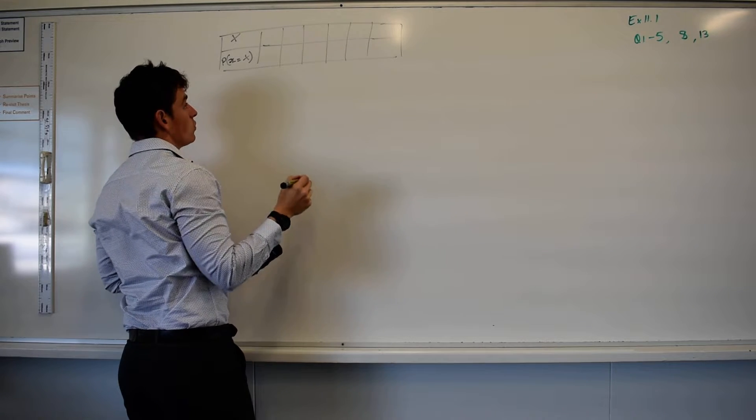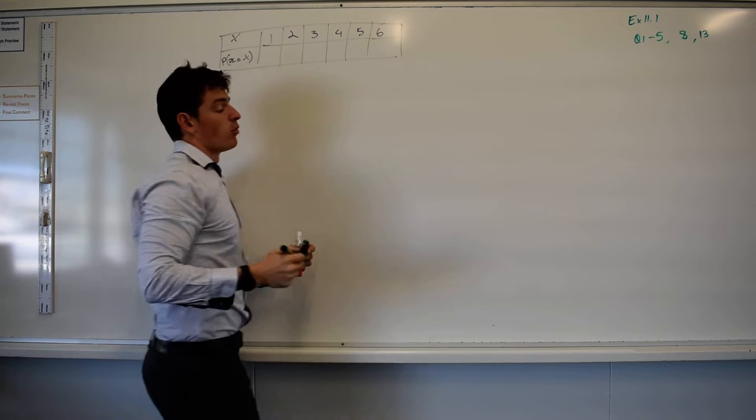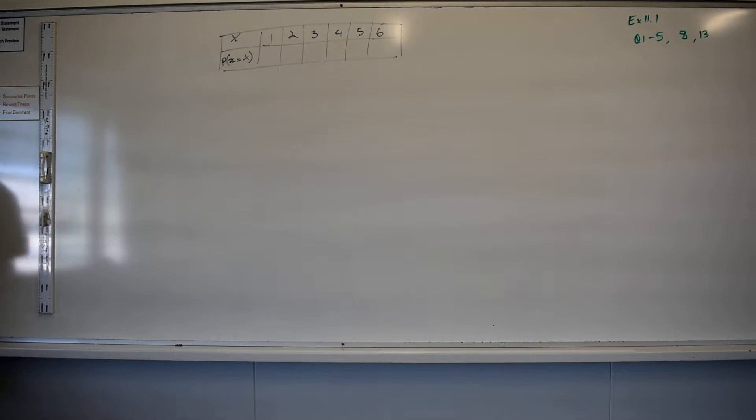Six. And what are those scores? One, two, three, four, five, and six. And what I want you to do is to fill in the probability of each of those occurring.